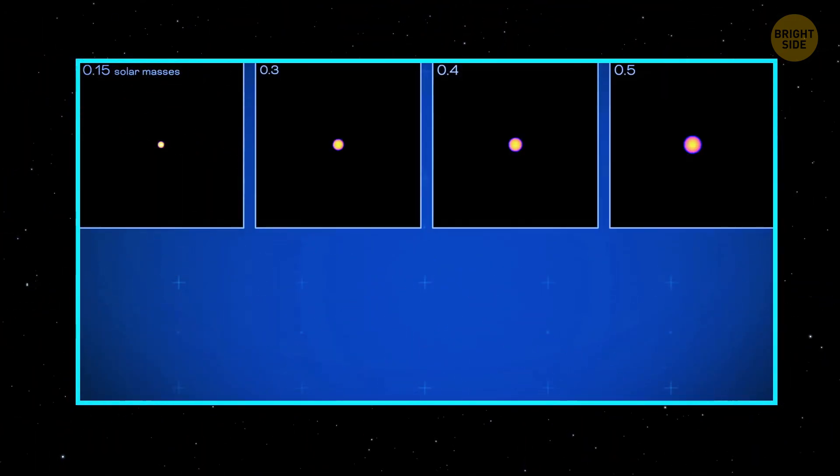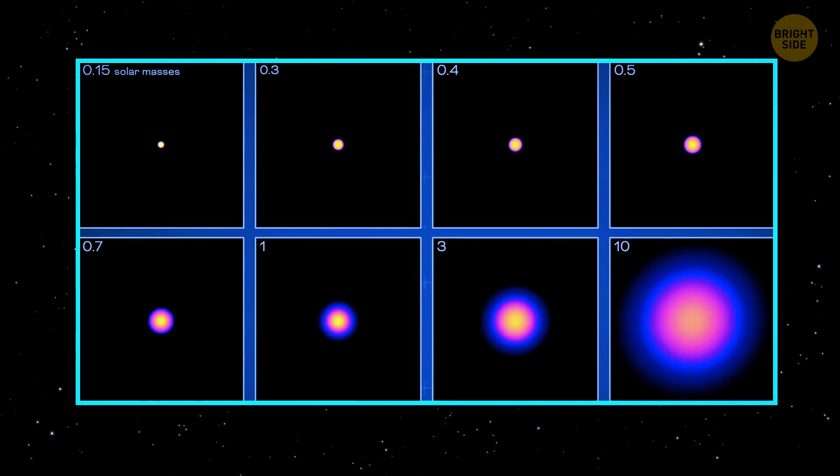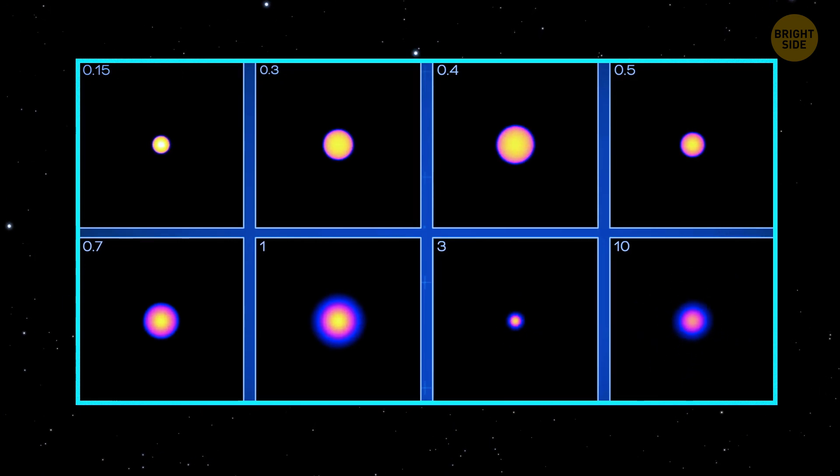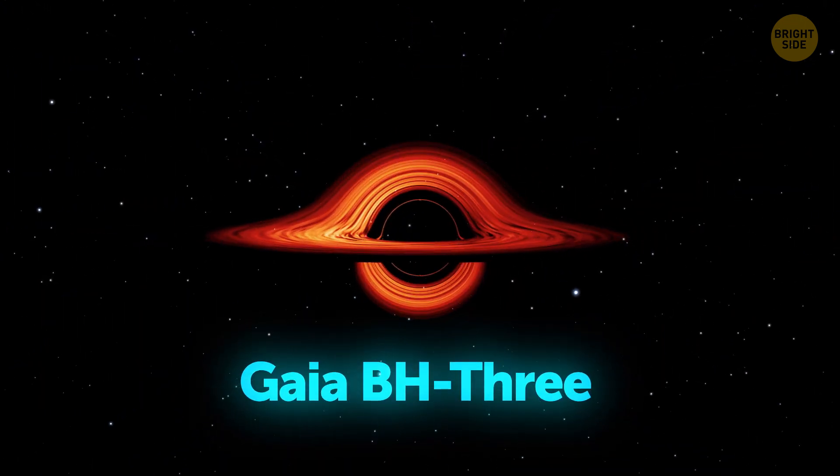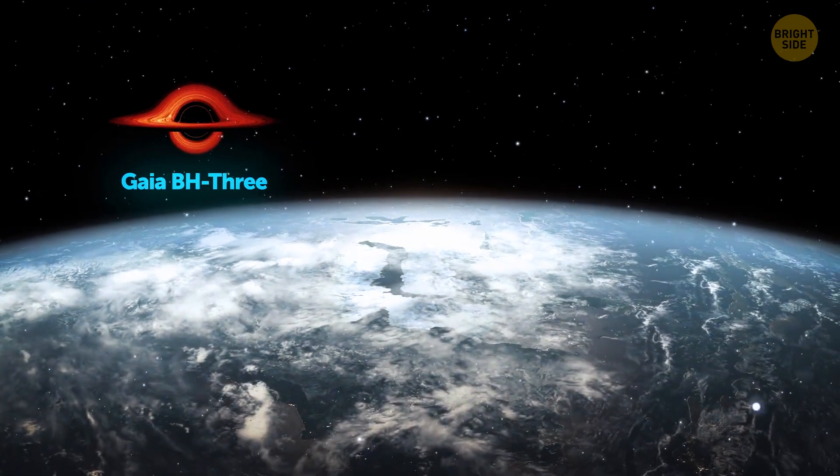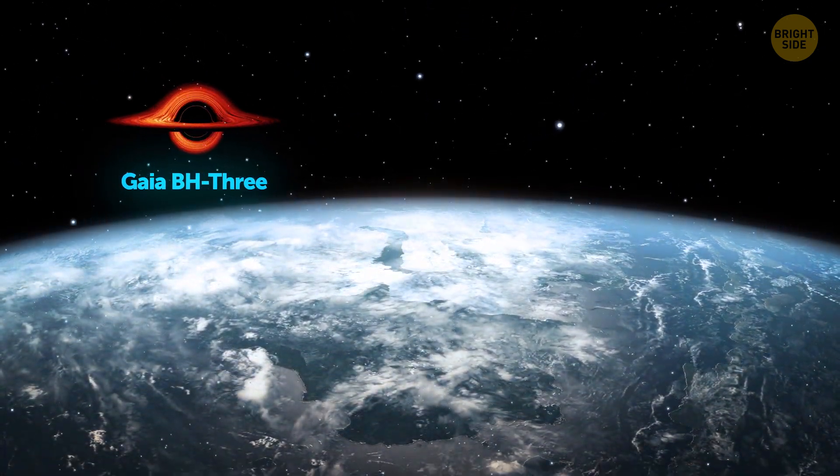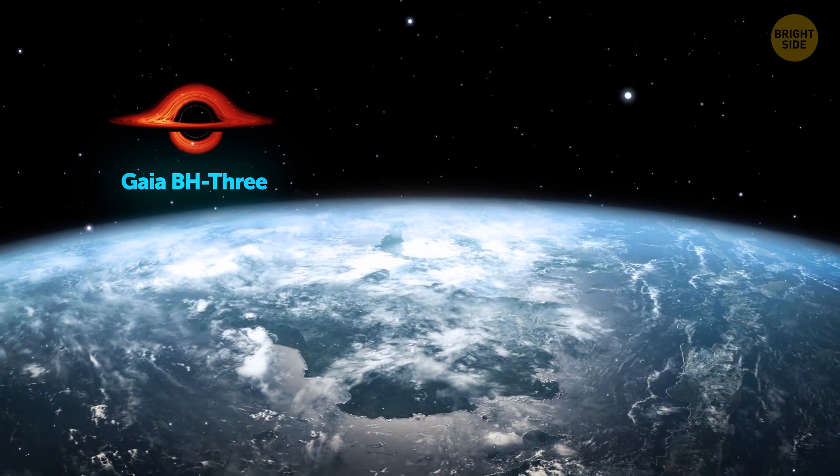Scientists spotted the giant black hole after a star started to wobble while orbiting in that area. The black hole got the name of Gaia BH3.